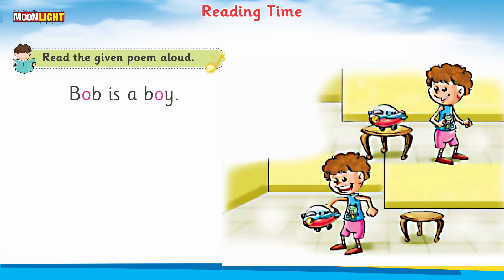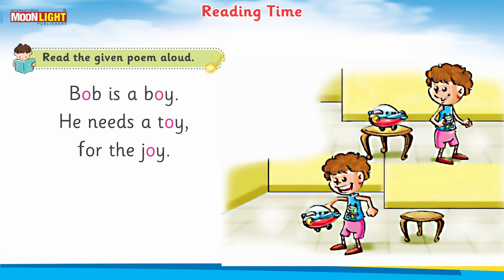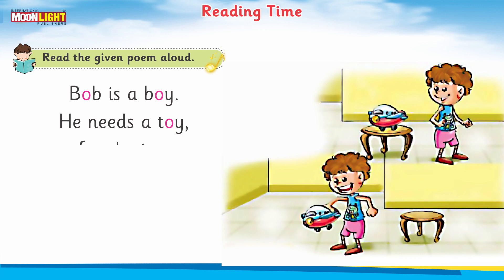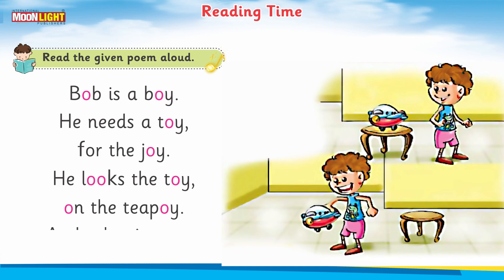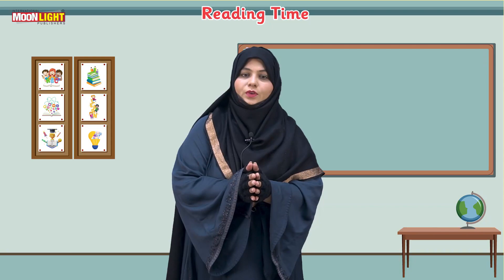I hope you are going to enjoy this rhyme. 'Bob is a boy. He needs a toy for the joy. Bob is a boy. He needs a toy for the joy. He looks for the toy on the tabletop, and takes it away.'